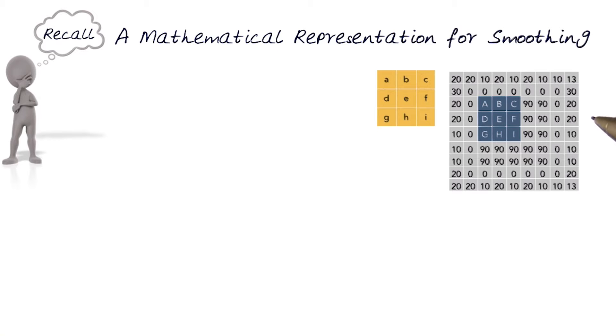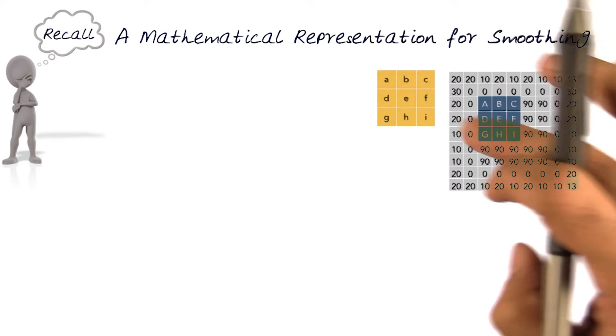Now in the previous lecture, I talked about how we can mathematically represent the whole concept of smoothing applied to images. We looked at a specific instance of being able to smooth an image with a kernel.